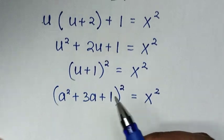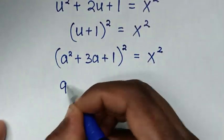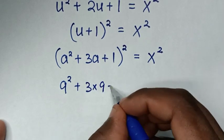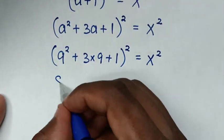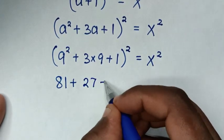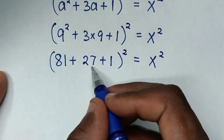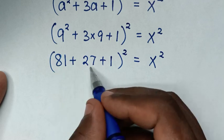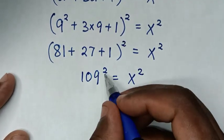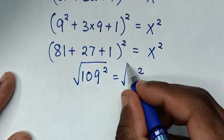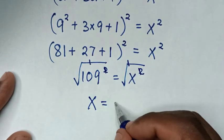Also, before we let a equal 9, so here we substitute 9, so it will be 9² plus 3 times 9, plus 1, all squared, equals x squared. Then 9² is 81, plus 3 times 9 is 27, then plus 1, all squared, equals x squared. Then 81 plus 27 is 108, plus 1 is 109. So 109 squared equals x squared. When we apply square root on both sides, the squares cancel, so x equals 109.